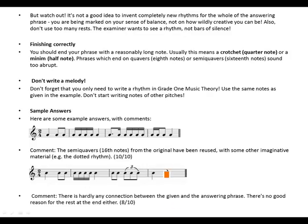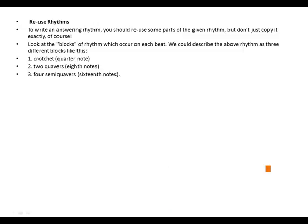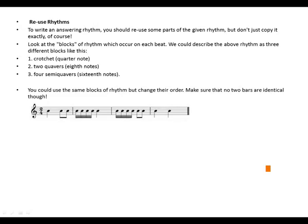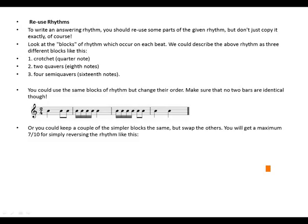There's no good reason for a rest here. To write an answering rhythm, you should reuse some part of the given rhythm but don't just copy it exactly. Look at the blocks which occur on each beat. We could describe the given rhythm as three different blocks: crotchet, two quavers, four semiquavers. You could use the same blocks of rhythm but change their order. Make sure that no two bars are identical, though. You will get a maximum of seven out of ten for simply reversing the rhythm.